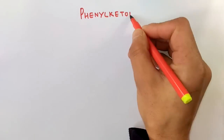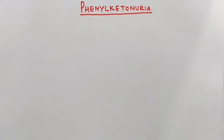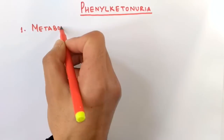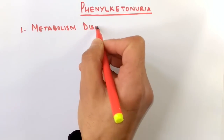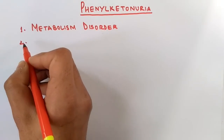In this video we will be discussing phenylketonuria. It is a metabolism disorder involving abnormal metabolism of phenylalanine. Phenylalanine is an amino acid present in our body whose metabolism gets distorted in a way that it produces some fatal effects — that's why we call it abnormal metabolism of phenylalanine.